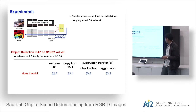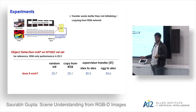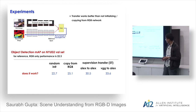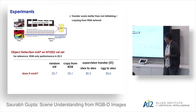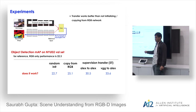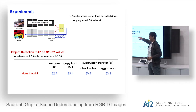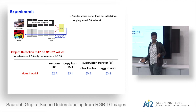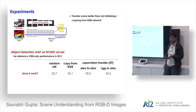Ablation experiments on object detection on NYU (mean average precision on validation set): random initialization gives 22.7; copying weights from RGB gives a small boost; supervision transfer from AlexNet to AlexNet gives a large boost from 25.1 to 30.5. Using a stronger VGG network on the color side for transfer further improves to 33.6 — demonstrating that better color semantics lead to better depth features.